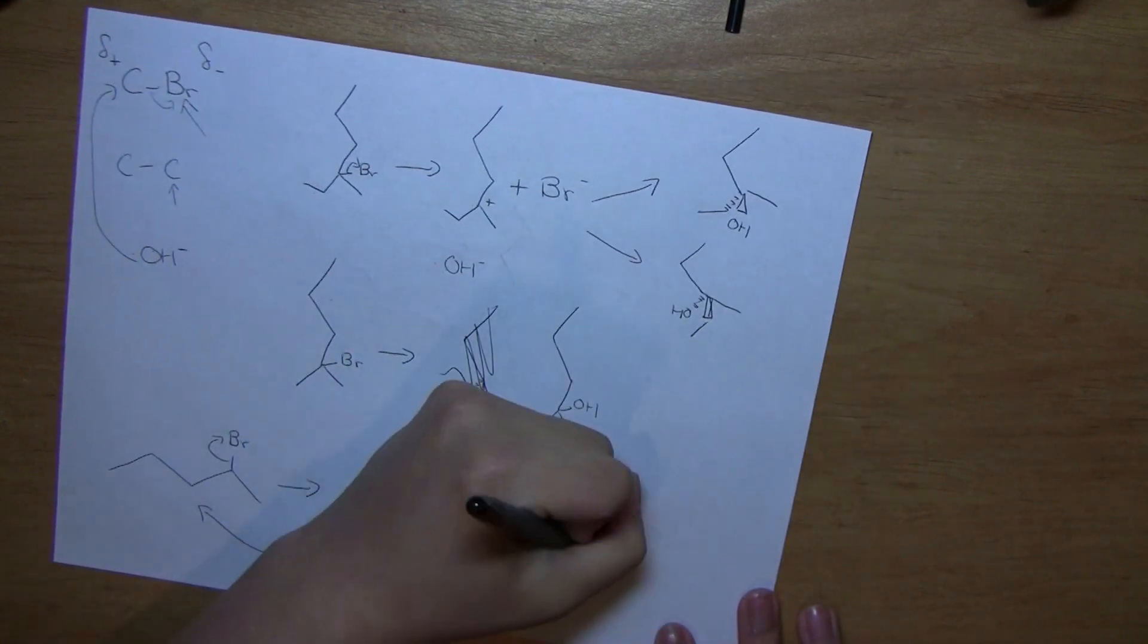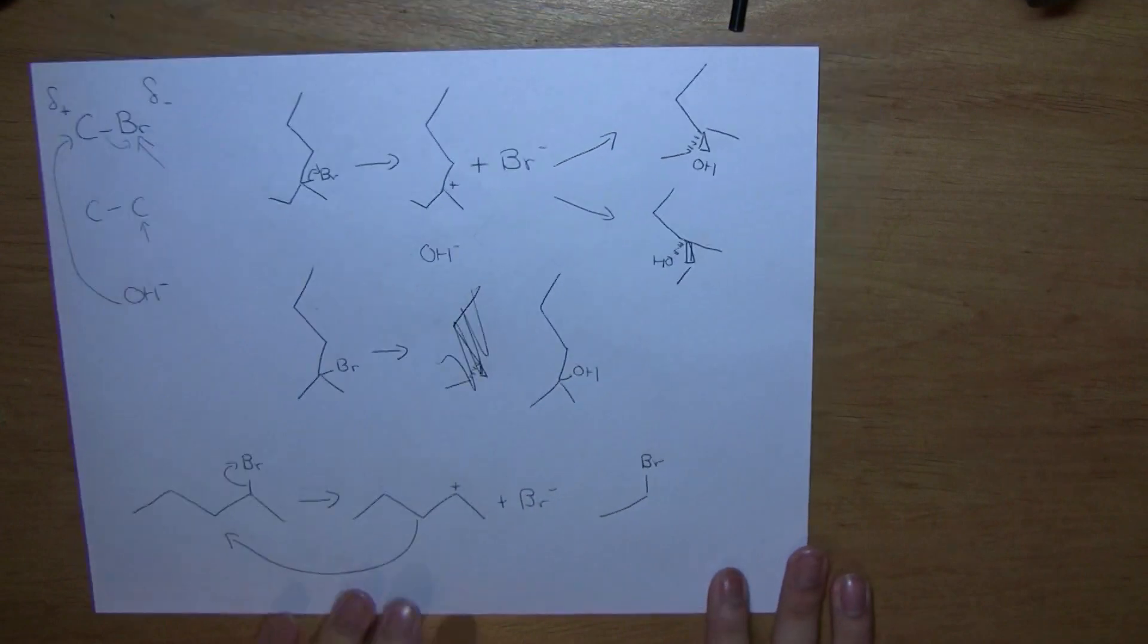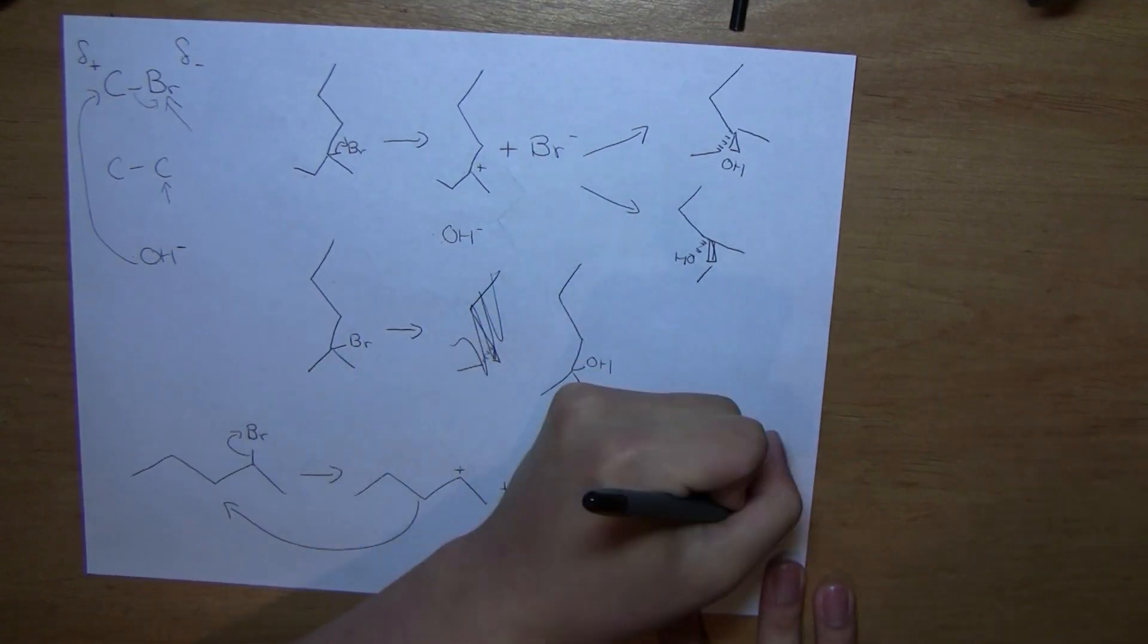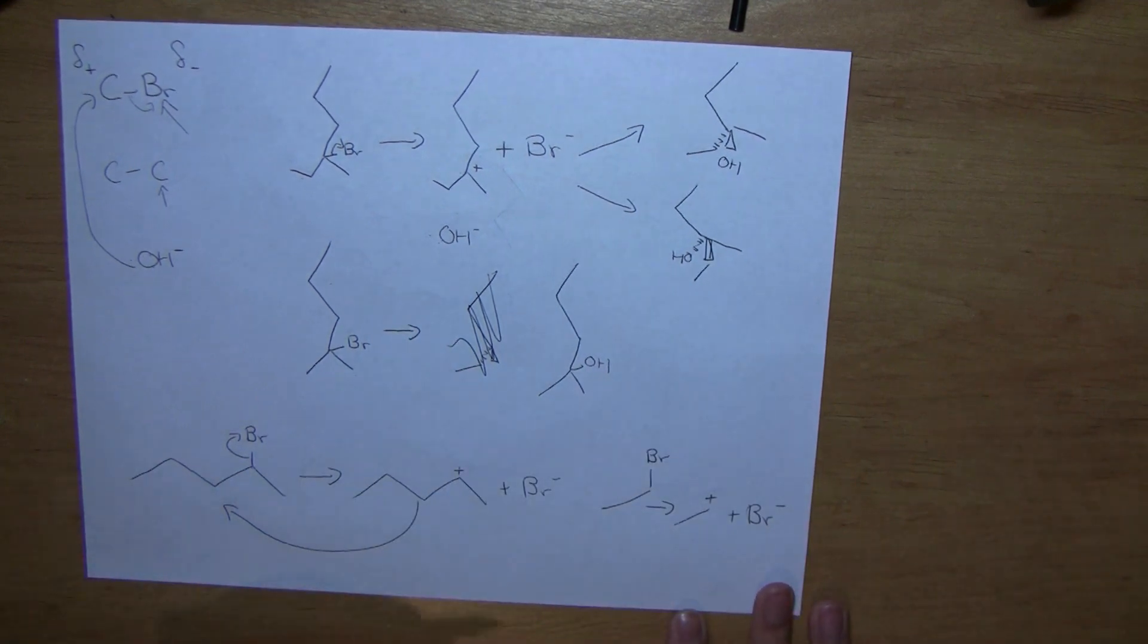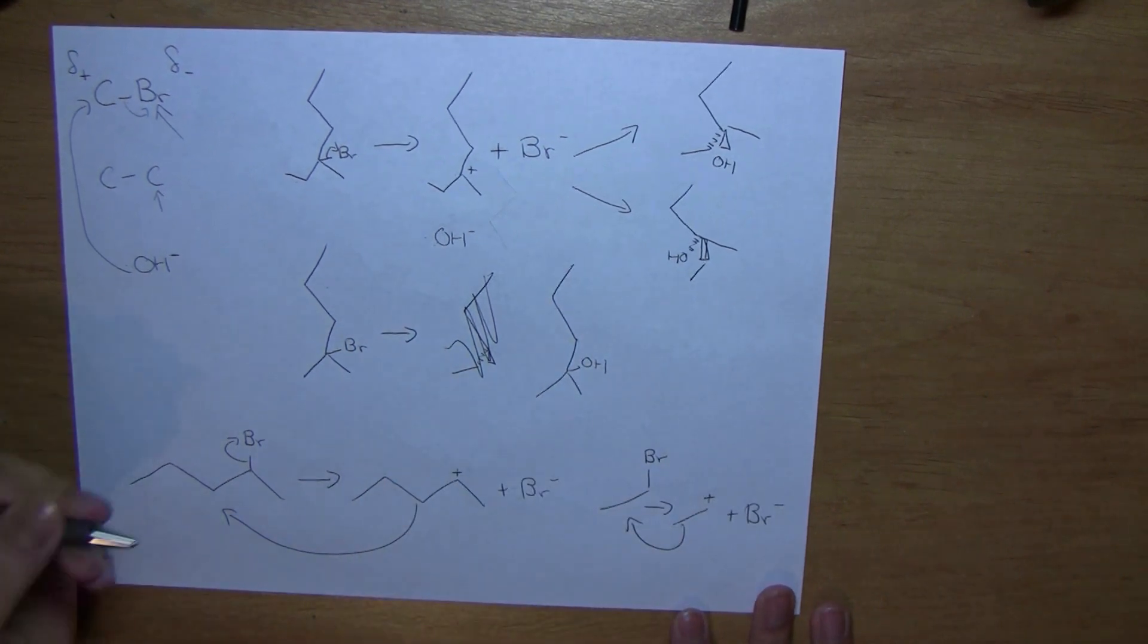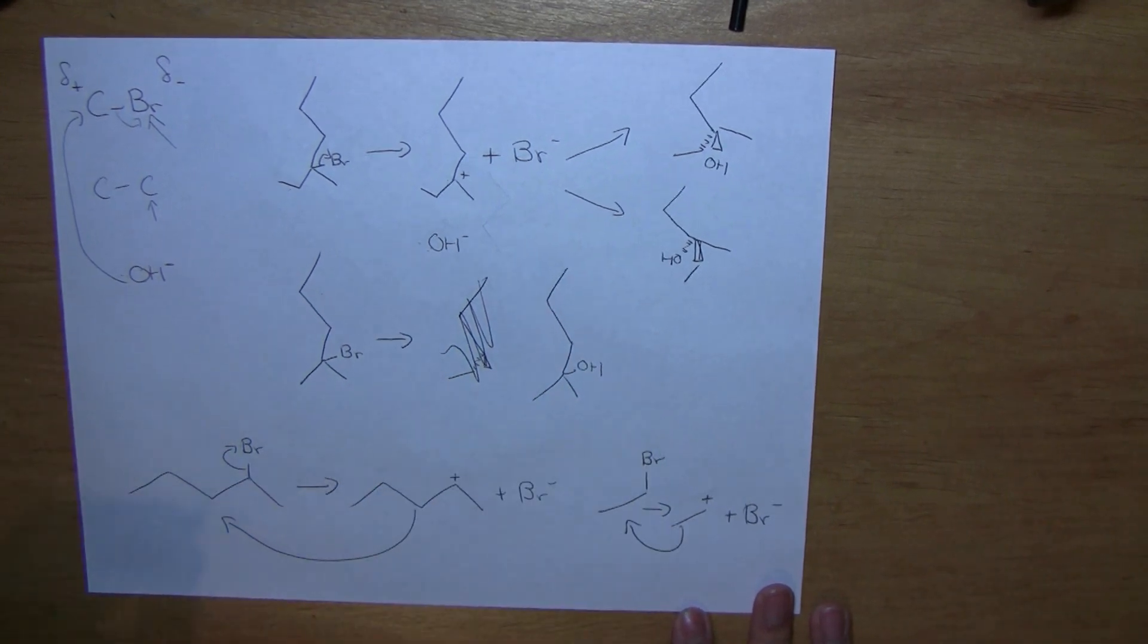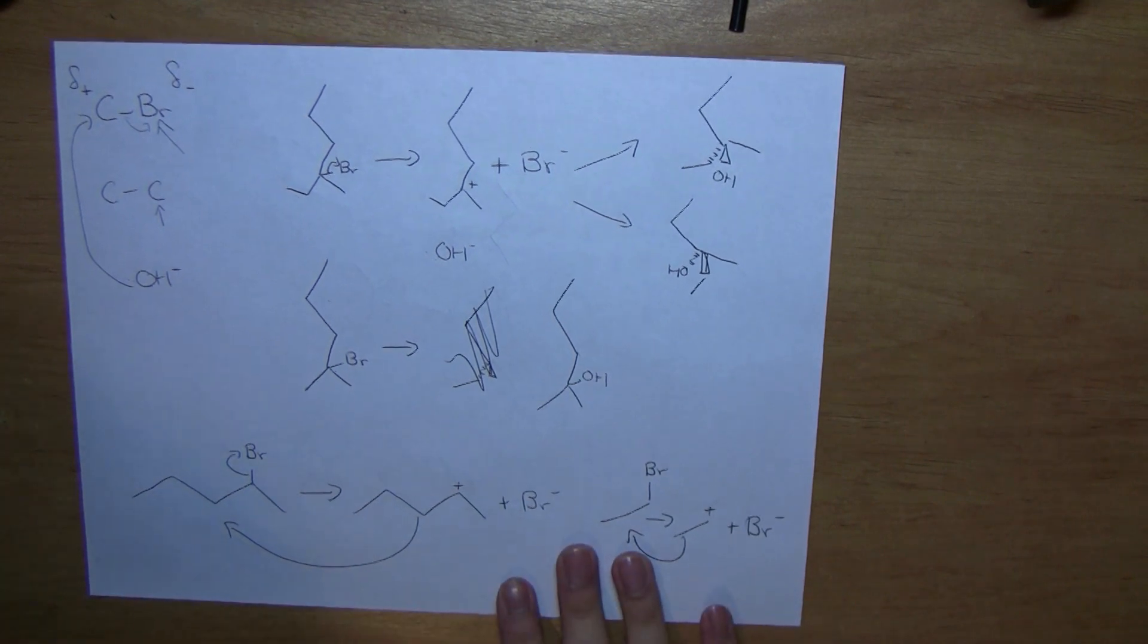Now, this case could also apply to a primary carbon, like so. We can have it form a cation, like so, a primary cation. But the problem is, just like before, it's so unstable that it would much rather prefer to go back to its reacted form. Therefore, in a secondary or primary carbon, we do not have an SN1 reaction happen. Instead, we have something known as an SN2 reaction happen. Thank you very much.